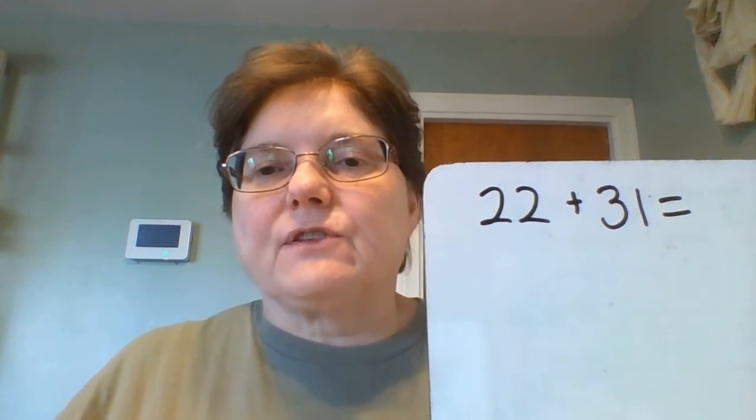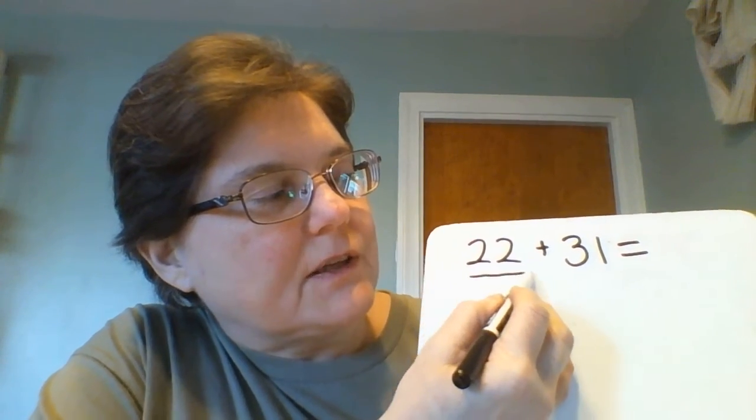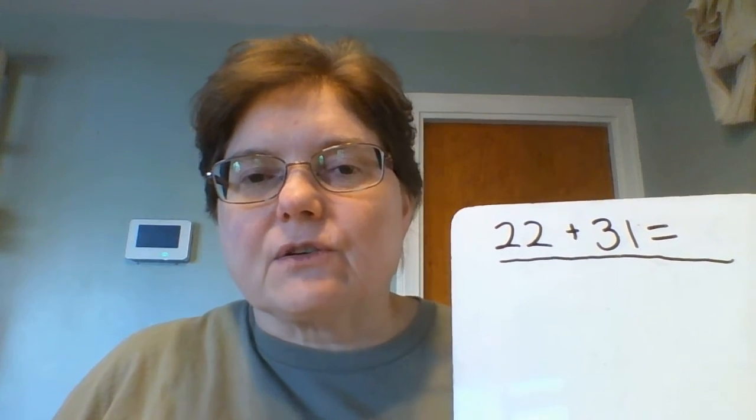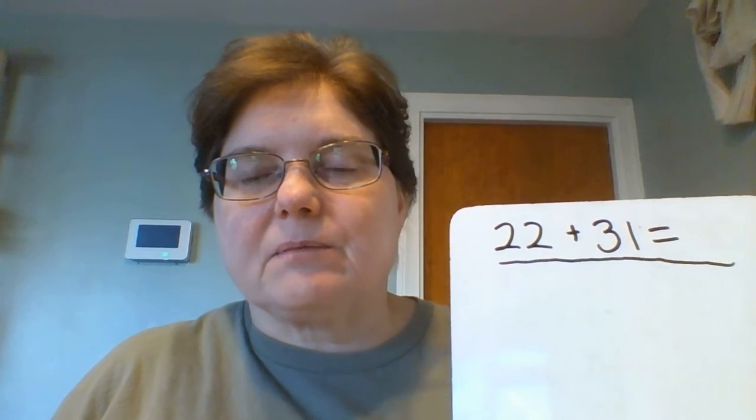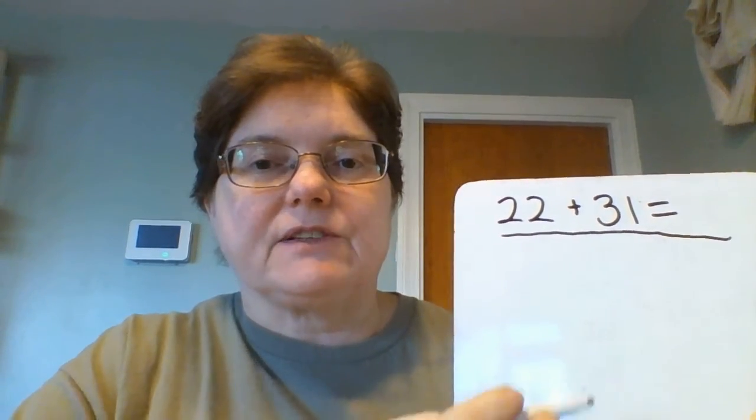So if you see a problem written out like this in a line, like 22 plus 31 equals, you're going to have to get your own pencil or pen and a piece of paper and write them out vertically, which means on top of each other.